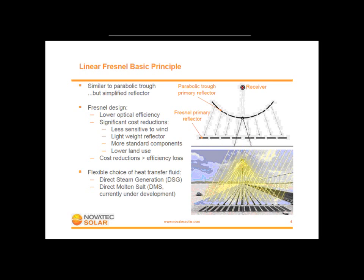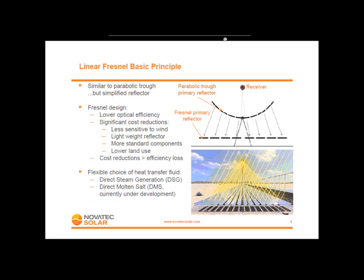Here you have a picture — on the top right corner — of a parabolic trough reflector and how it compares to a Fresnel primary reflector. The idea with Fresnel is that by slicing your parabolic trough reflector into various lines, you can achieve the same kind of optical concentration of the sun rays without having this large mirror, which represents quite some weight to be moved by motors and which also induces higher costs compared to flat mirrors.